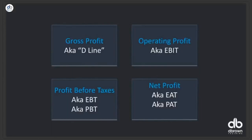After SG&A you get EBIT. Then you have interest expense — paying your financiers — giving you earnings before tax. After interest, you pay the government — that's tax — and then you have net profit, or earnings after tax. That's the only time shareholders can eat. That's why I think it's called EAT: earnings after tax. Shareholders get their meal in the form of dividends.